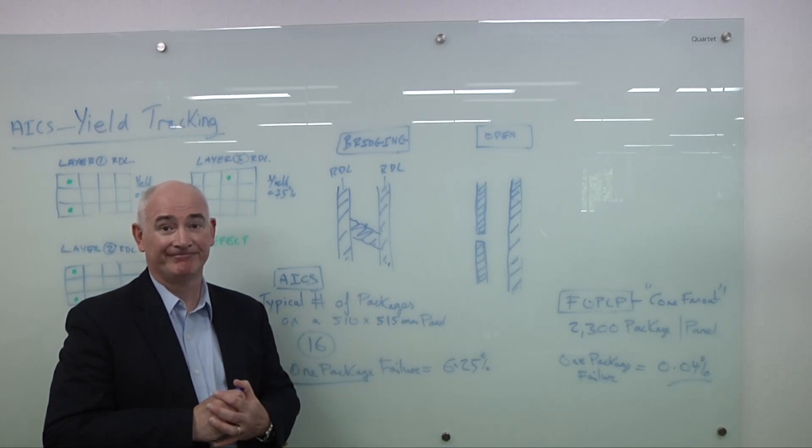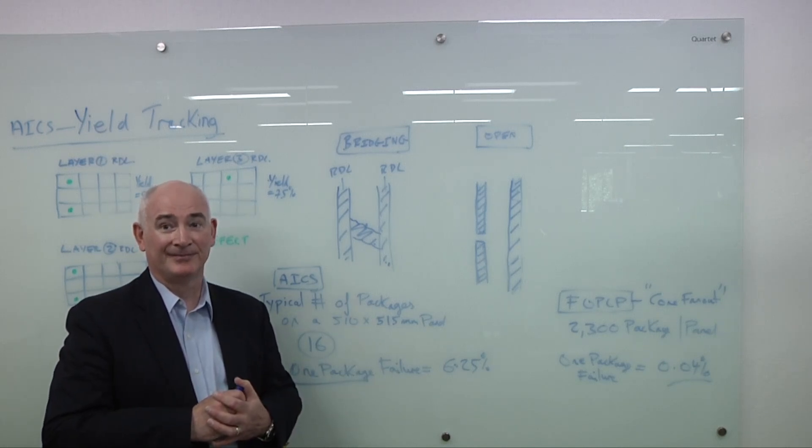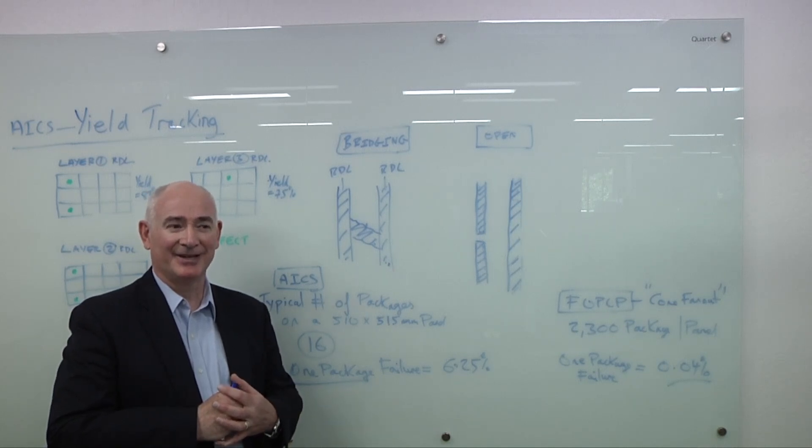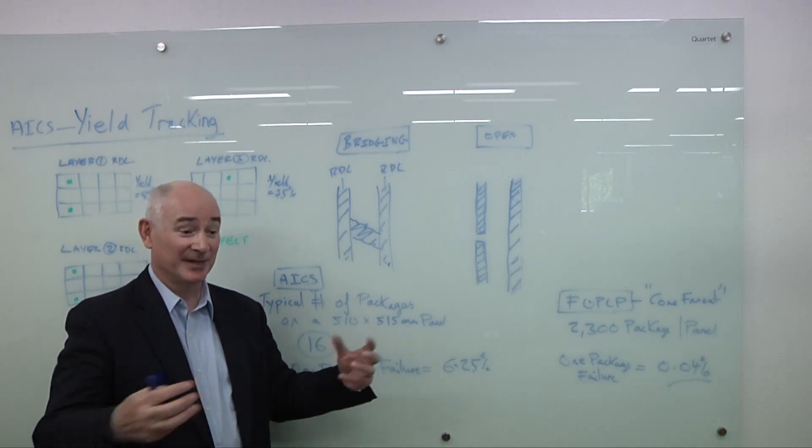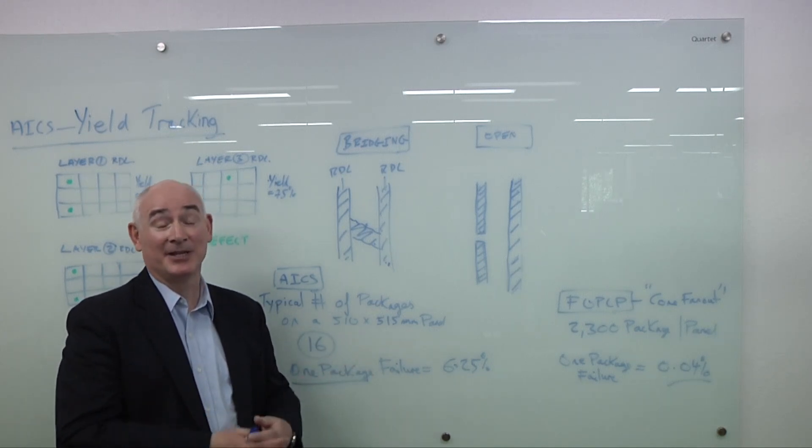Are they still pushing advanced nodes in addition to the RDL layers? Yes, but the advanced nodes just end up in the chiplets, effectively, right? So you just bring them together to finally come together in the package.